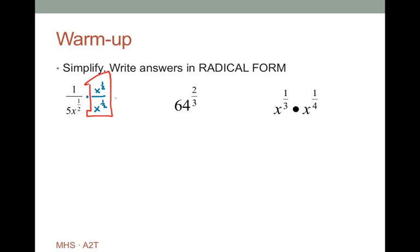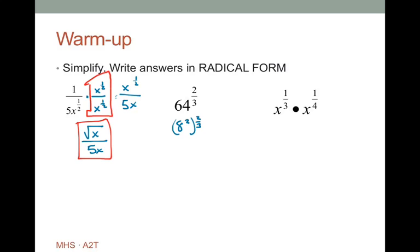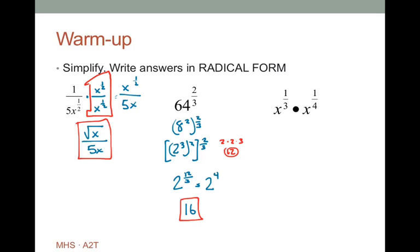Hopefully you've worked them out. Here are the results. I'm going to multiply top and bottom by x to the one-half to rationalize the fractions, and I'm going to end up with the square root of x over 5x. For 64 to the two-thirds, I have to remember that 64 is 8 squared, raised to the two-thirds, or that 8 squared is also 2 cubed. So combining all of those fractions, I get 2 to the twelve-thirds or 2 to the fourth, which is 16.